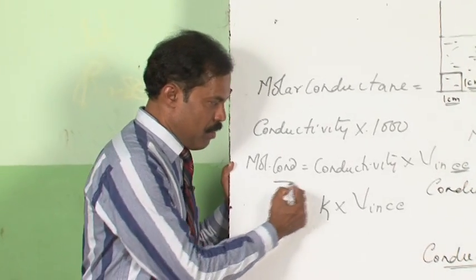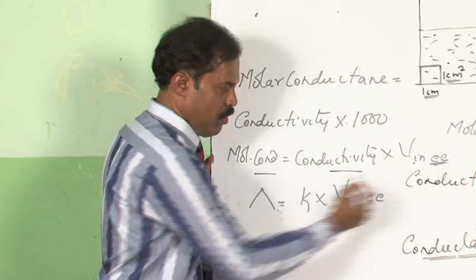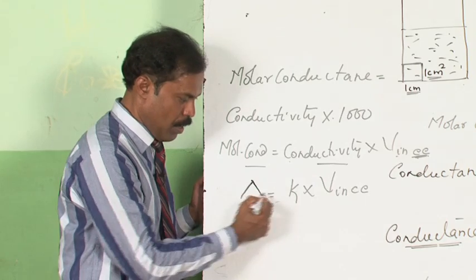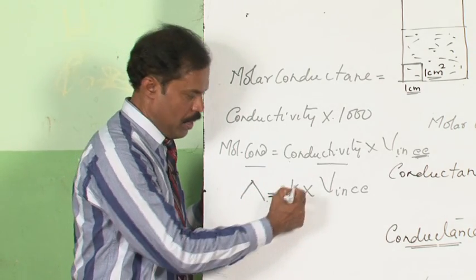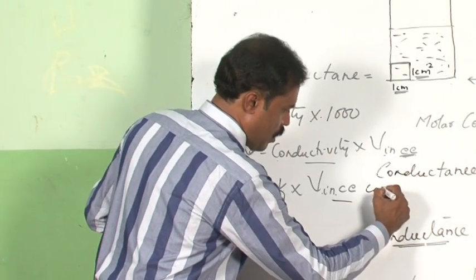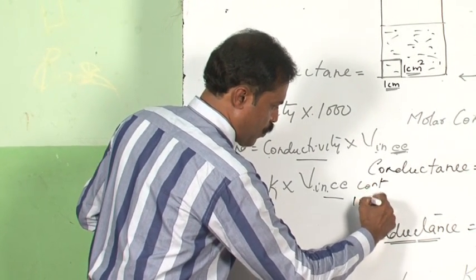The molar conductance is conductivity into V in cc. If you put it in terms of symbols, this becomes lambda equals kappa into volume in cc containing 1 mole of substance.